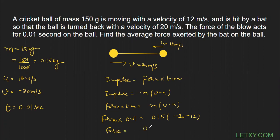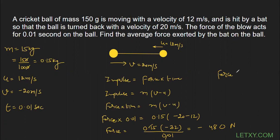So Force = 0.15 × (-32) / 0.01. The two decimal points cancel, leaving 15 × 32, which is the same calculation as before: 15 × 32 = 480. So Force = -480 N. We get the same value using both methods. Whichever method is easy for you, you can use it. The average force exerted by the bat on the ball is -480 N.